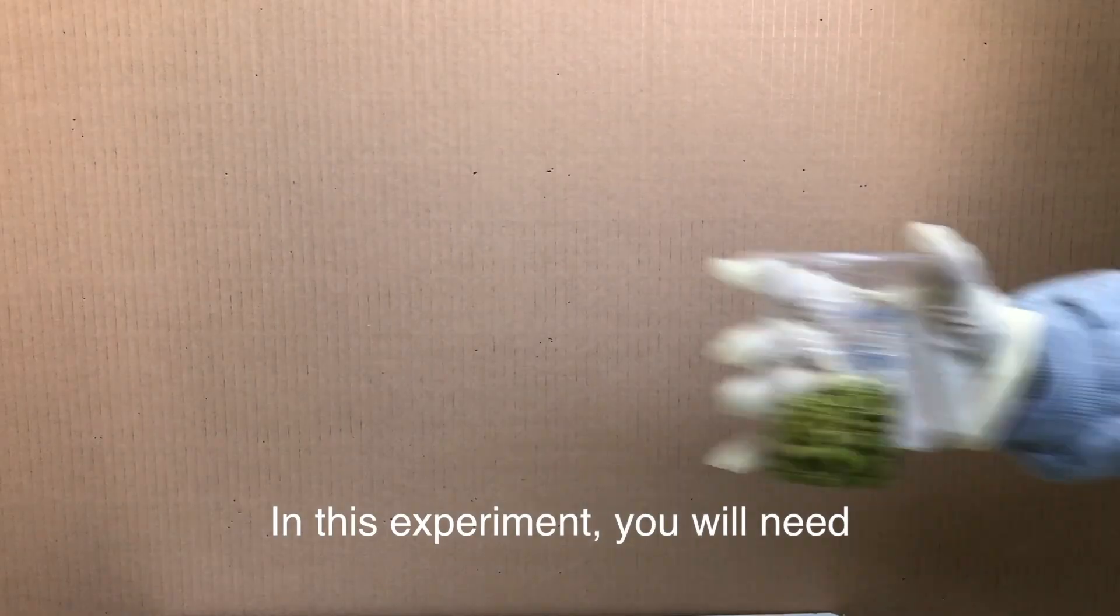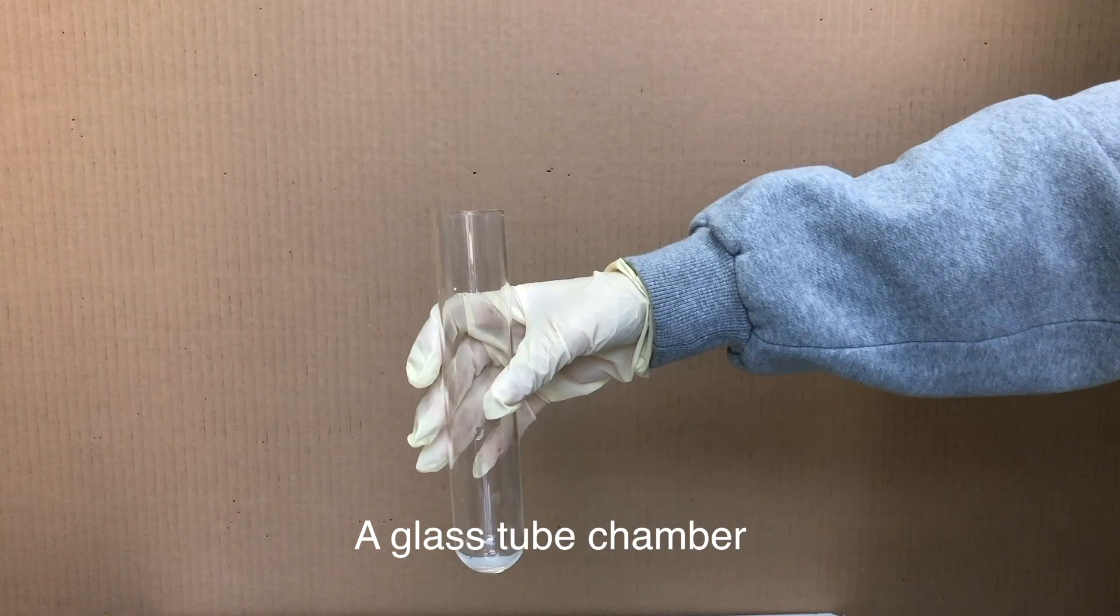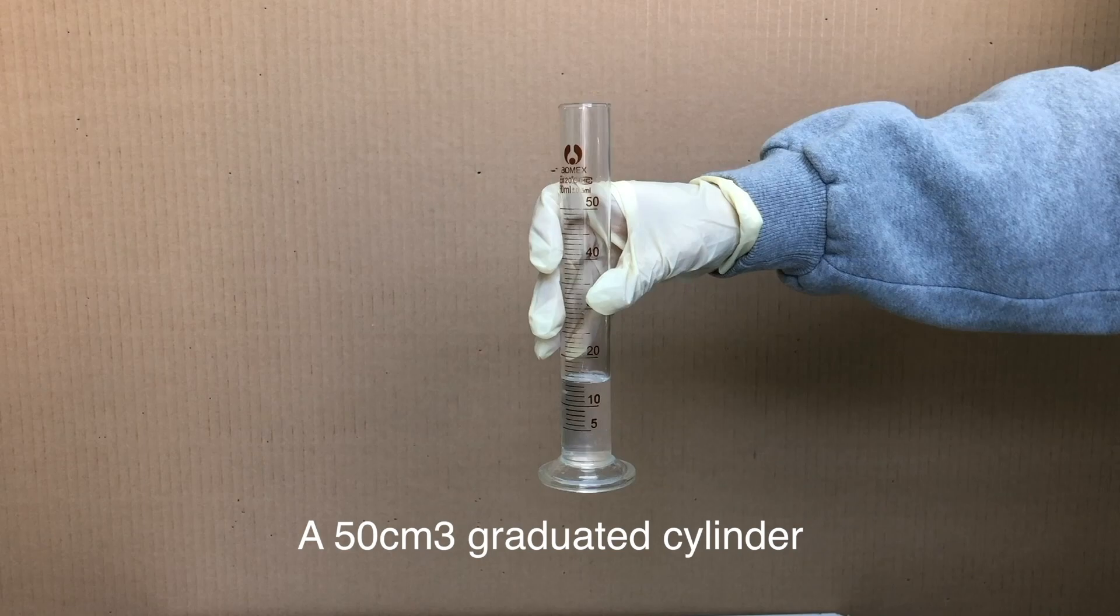In this experiment you will need mung beans, a metal ring stand, a glass tube chamber that looks very similar to a test tube, and a 50 centimeter cubed graduated cylinder.